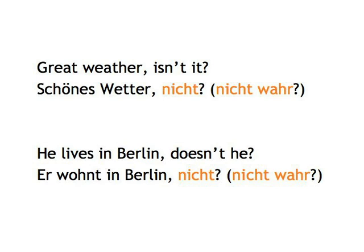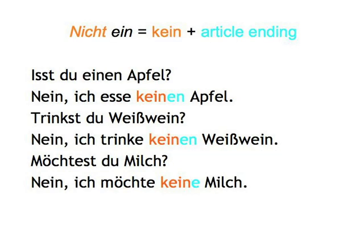Apart from nicht, there are a few other words expressing negation. First and foremost, we have kein — the negative form of ein — meaning 'not a' and 'not any.' It takes the same endings as ein and is used to negate nouns preceded by ein, but also nouns with no article at all referring to things of unspecified quantity, such as bread, milk, meat, etc. Isst du einen Apfel? Nein, ich esse keinen Apfel. Trinkst du Weisswein? Nein, ich trinke keinen Weisswein. Möchtest du Milch? Nein, ich möchte keine Milch.